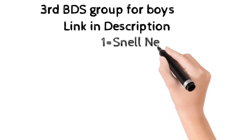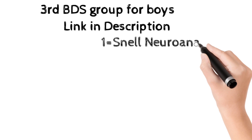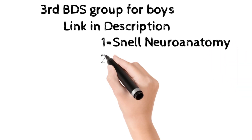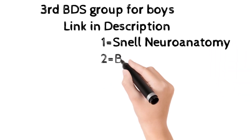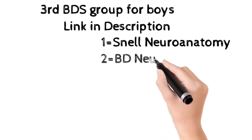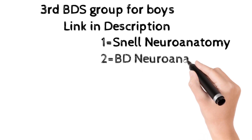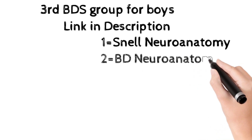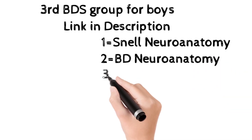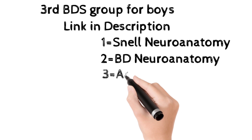The important book for neuroanatomy is Snell Neuroanatomy. The second is the BDS book. These two are the long books, but if you want to study a shorter book, there is one called Atlas.